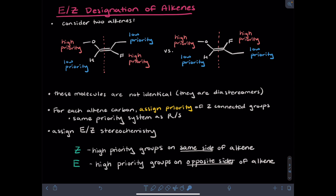Once we've assessed each alkene carbon and its substituents and assigned high priorities, then we can assign the E/Z stereochemistry. We'll use the letter Z to describe the situation where the high priority groups are on the same side of the alkene, and we'll use E to describe having high priority groups on opposite sides of the alkene. Imagining the molecule through the alkene, the high priority oxygen is on one side and the high priority fluorine is on the other side — these high priority groups are on opposite sides, so this would be E stereochemistry. In the case of the other alkene, the high priority oxygen group and the high priority fluorine are both on the top part of the alkene, so we would describe this as Z configuration.